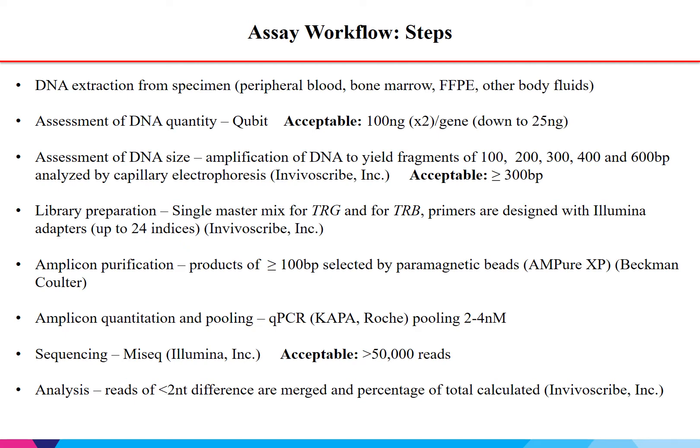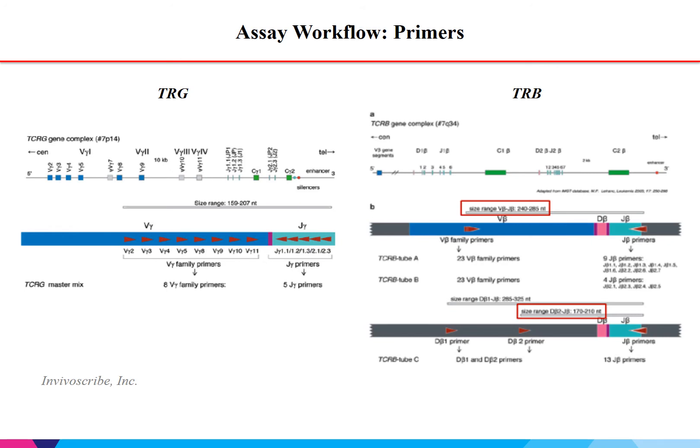Next, we have amplicon purification, followed by quantitation and pooling. The quantitation is performed by quantitative PCR with pooling for 2 to 4 nanomolar. Sequencing is performed on an Illumina platform, a MiSeq, where the acceptable minimum number of reads is at least 50,000. Data analysis is performed using software from InVivoScribe, which merges reads that differ by less than two nucleotides and expresses them as a percentage of the total number of reads obtained. The primers used are provided by InVivoScribe, showing the VJ primers for TRG and the V-to-J or DB-to-J primers for TRB.